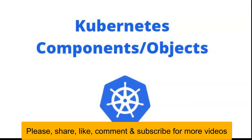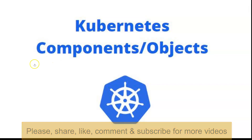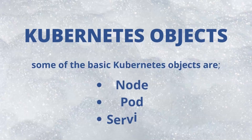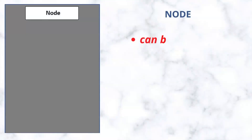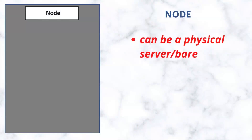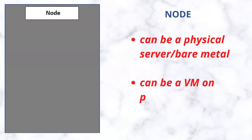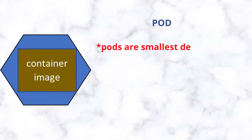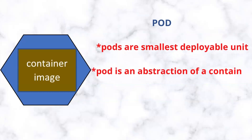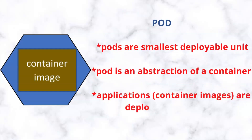Before we look at the OpenShift architecture, let's understand some Kubernetes components or objects, because OpenShift is built on top of Kubernetes. The first Kubernetes object to talk about is the node — nodes are just servers; they can either be a physical server (bare metal) or a virtual server. The second object is the pod. The pod is the smallest execution unit in Kubernetes. Unlike Docker or Podman where the smallest unit is the container, a pod is an abstraction over a container — it could be an abstraction of containers such as Docker, CRI-O, or containerd.